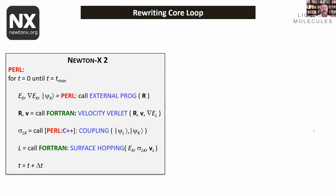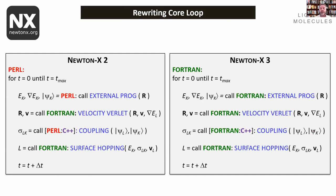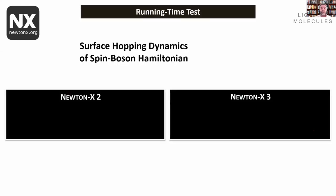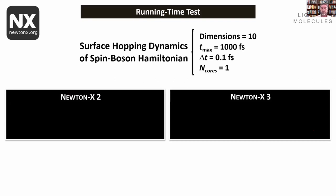Looking at the current state of the code — as I mentioned, it's a mismatch of languages and styles: Perl, Fortran, C++ — Newton-X Free will have a much cleaner workflow with reduced input/output in a very consistent way. This makes a big difference. For a test with an analytical Hamiltonian using surface hopping for the spin-Bosch Hamiltonian, 10 dimensions, 1000 femtoseconds, 0.1 femtosecond time step, Newton-X 2 takes shamefully four hours, while Newton-X Free drops to 10 minutes.